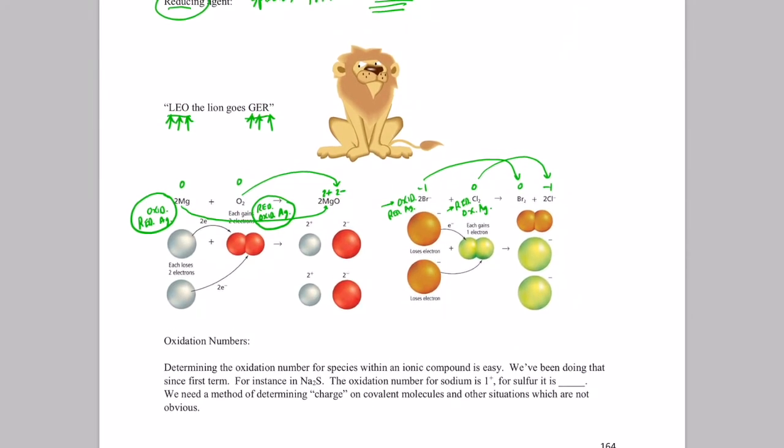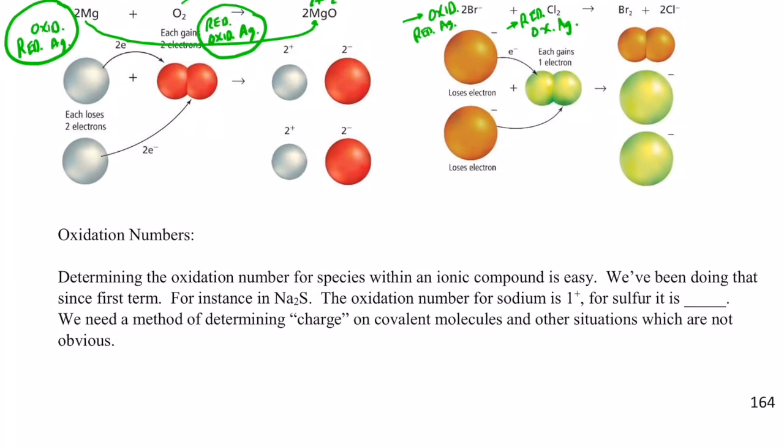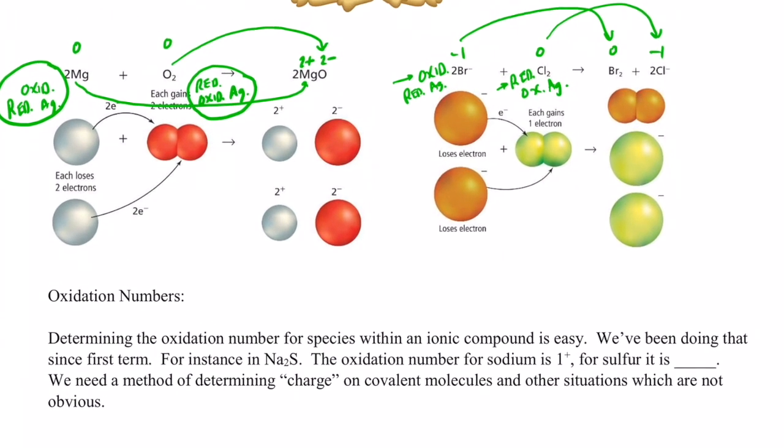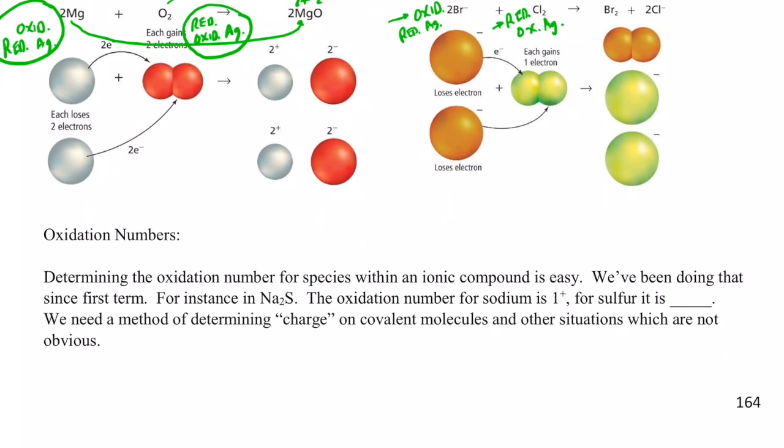Alright. Now, I want to quickly talk about oxidation numbers. We've identified a few oxidation numbers already, when we talked about the reactions up above. So, determining the oxidation numbers for species within an ionic compound, as we did earlier, is pretty easy. In fact, we've been doing that for a long time. For instance, if I have the compound Na2S, the oxidation number for sodium, of course, is positive one.